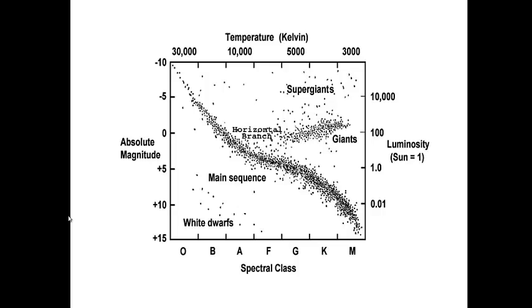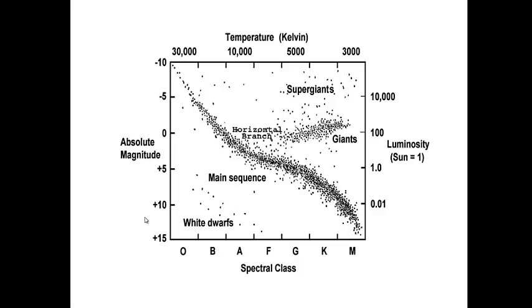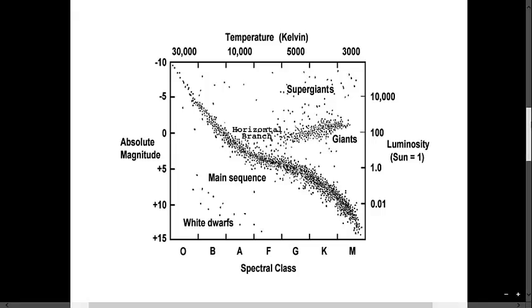The more negative a star's absolute magnitude, the brighter it is, and the more positive a star's absolute magnitude, the dimmer it is. This can be confusing because in math, when one makes a graph, positive always goes up or to the right, and negative to the left or down. However, on the HR diagram, it is reversed.